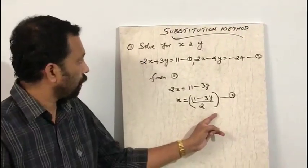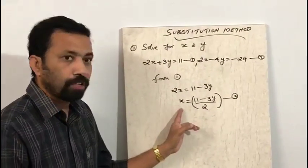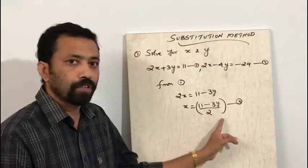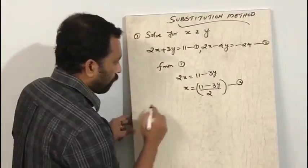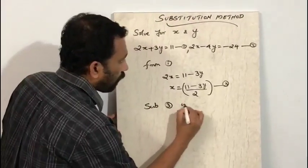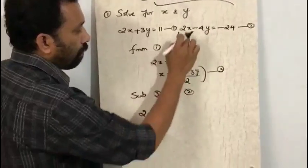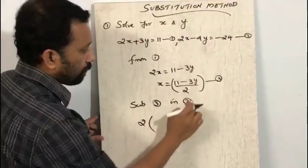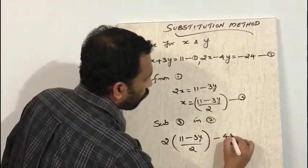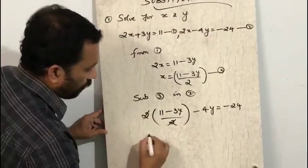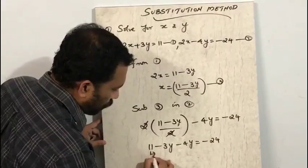Similarly, if you want, you can transpose 2x to the other side to get y in terms of x. So either x in terms of y or y in terms of x. Afterwards, substituting equation 3 into the second equation — 2x minus 4y equals minus 24 — we replace x with 11 minus 3y upon 2, giving us 2 times (11 minus 3y upon 2) minus 4y equals minus 24.